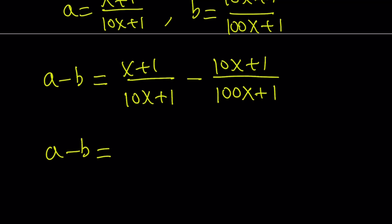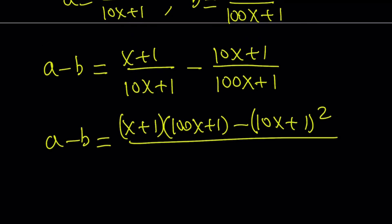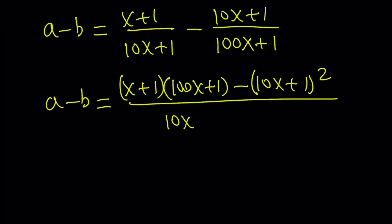So a minus b. We need to multiply, kind of crisscross. So it's going to be (x + 1) times (100x + 1). And then minus, we have (10x + 1) multiplied by itself, which can be written as (10x + 1)^2. And that is going to be divided by the common denominator, which is (10x + 1) multiplied by (100x + 1).